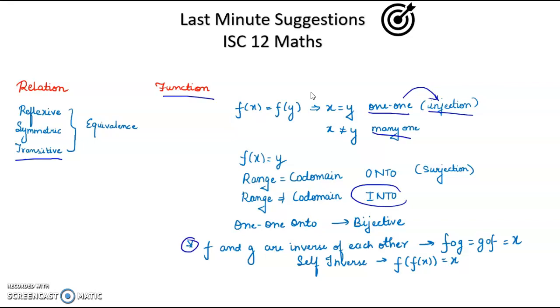Now, questions on composition of functions: if they ask you that f and g are inverse of each other, that means f∘g = g∘f = x. f∘g means f(g(x)), and if it is self-inverse function, that means f(f(x)) = x.